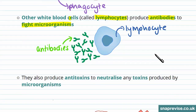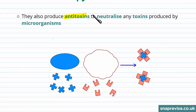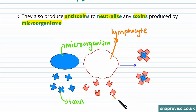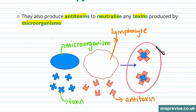Lymphocytes also produce antitoxins, which neutralize any toxins produced by microorganisms. This is a microorganism and this is a toxin it produced. This is a lymphocyte and this is an antitoxin. You can see that the antitoxins have bound to the toxins and this neutralizes them.